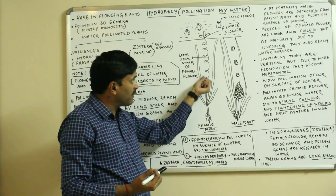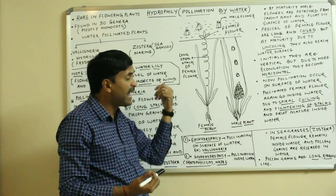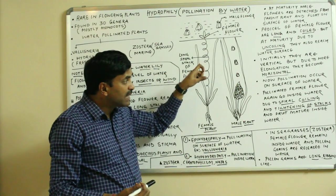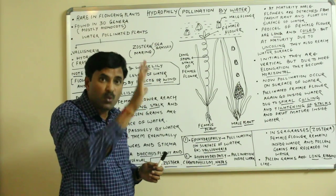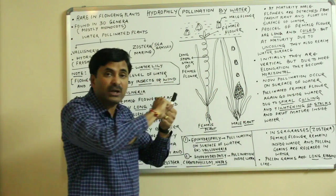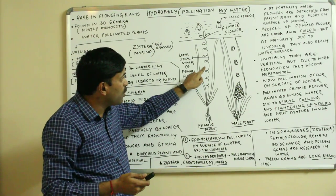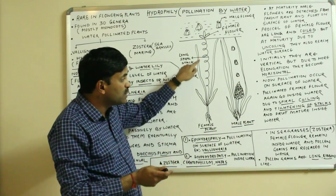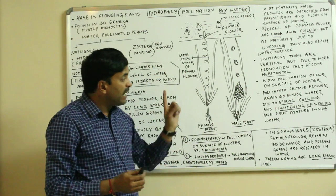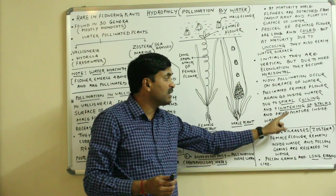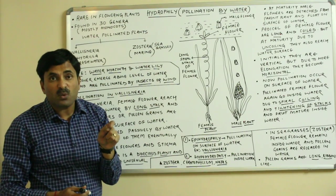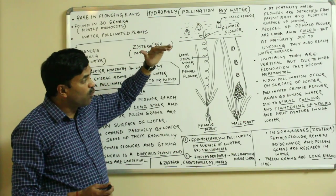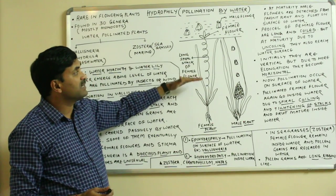After pollination is over, the long stalk — which had become uncoiled at the time of pollination — becomes spirally coiled again. Due to the tightening of this stalk, the female flower is pulled back inside the water, and fruit formation occurs inside the water only. So only the act of pollination occurs on the surface; all other events including fruit formation occur inside the water body.